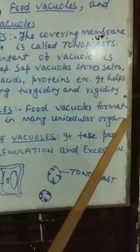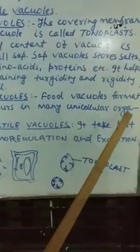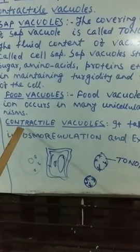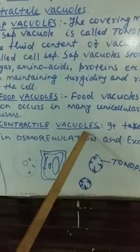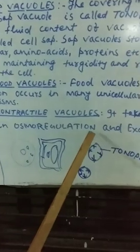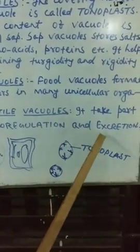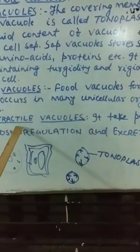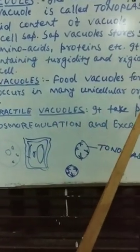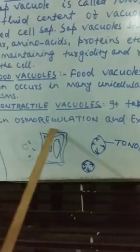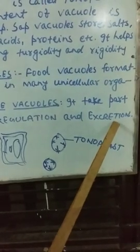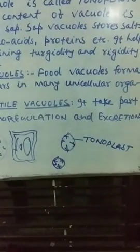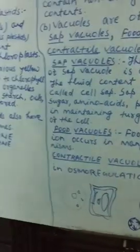Food vacuole formation occurs in many unicellular organisms, in the case of amoeba. Contractile vacuoles take part in osmoregulation, water balance, and excretion — removal of waste substances from the body. In many organisms, the contractile vacuole functions in osmoregulation and excretion. One important short topic is cell division.